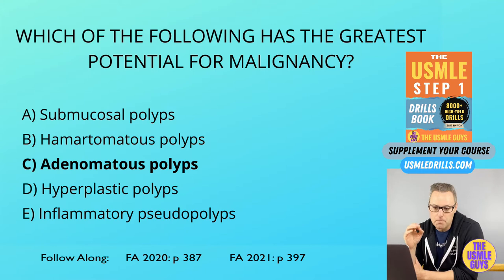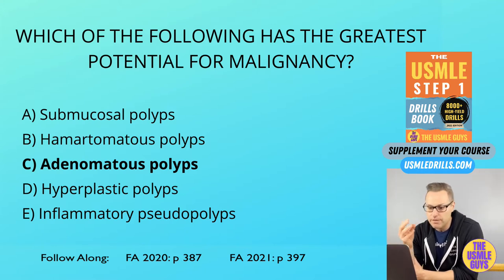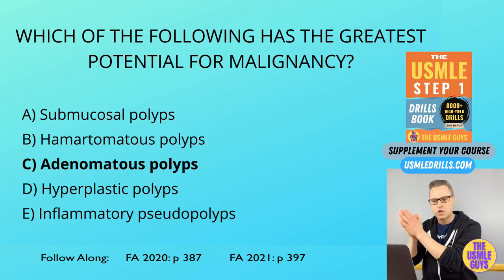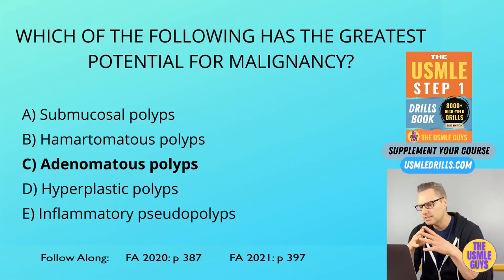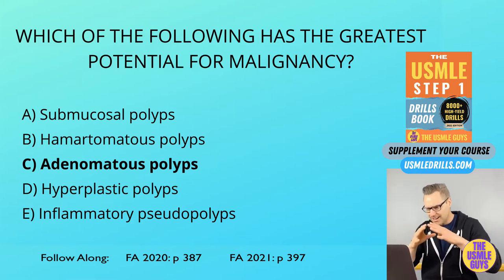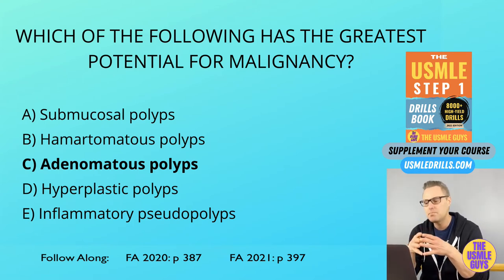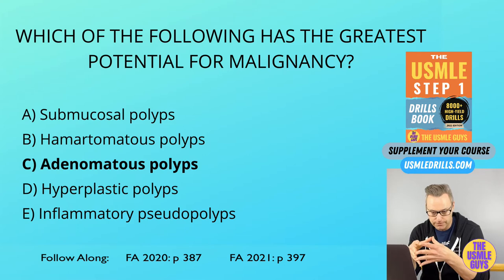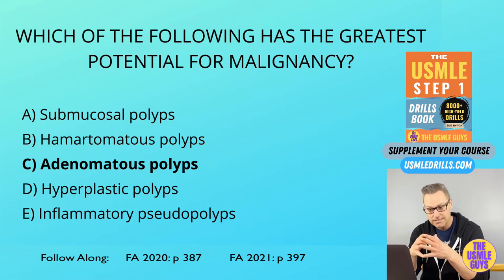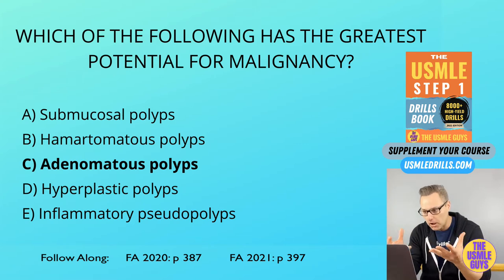The inflammatory pseudopolyp is actually caused by mucosal erosion seen in either ulcerative colitis or Crohn's disease — the IBDs. Basically you're going to see a section of normal mucosa that appears to be raised; however, it only appears that way because the tissue around it has atrophied. Remember that this is a pseudopolyp, meaning it's not an actual legitimate polyp.